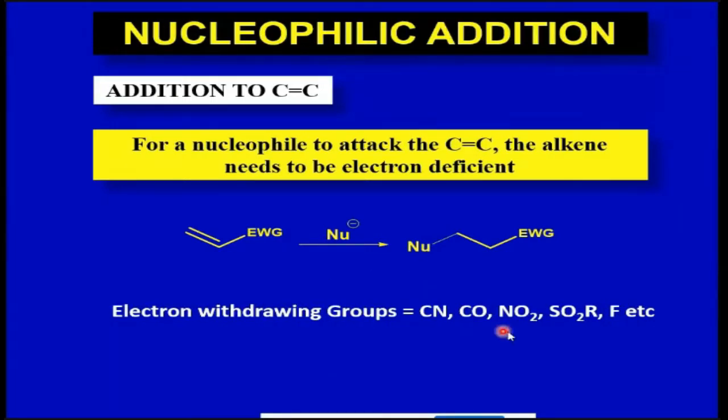These electron withdrawing groups could be of any type like cyanide groups, carbonyl groups, nitro groups, sulfone groups, halogens, etc.